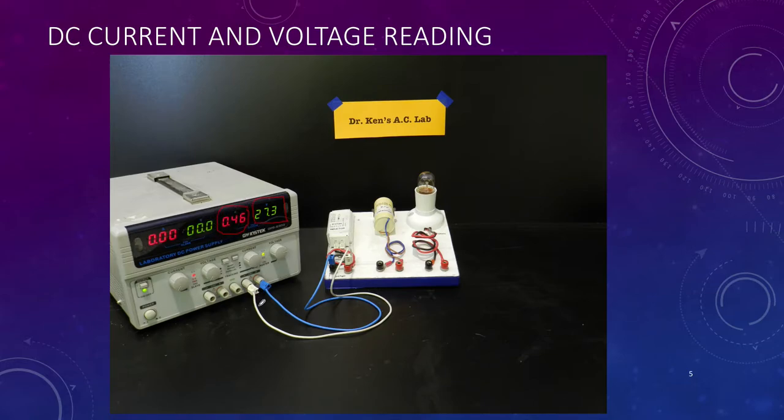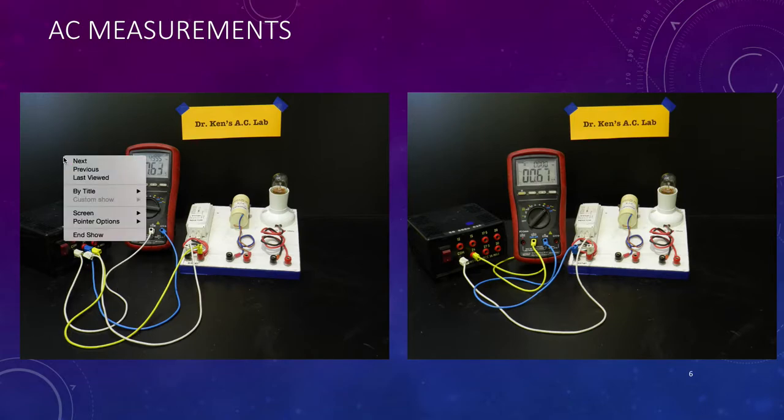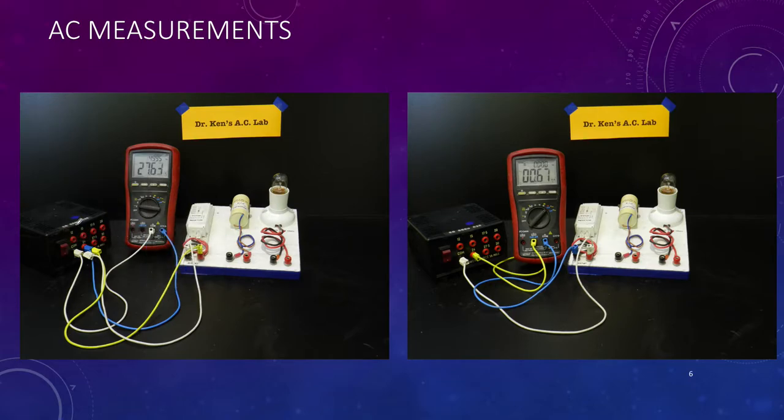Our next step is to do similar readings but this time using an AC power supply. I'm using a 24-volt AC power supply which is actually putting out 27.6 volts. I've got my multimeter in current mode in series with my inductor, and I'm drawing about 67 milliamps or 0.067 amps.